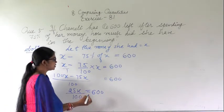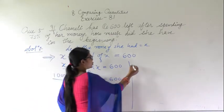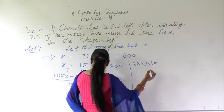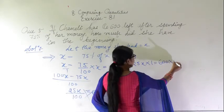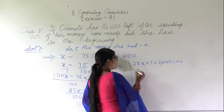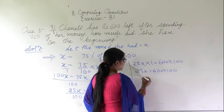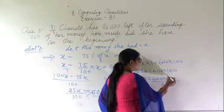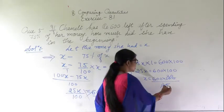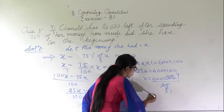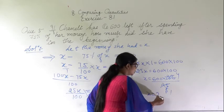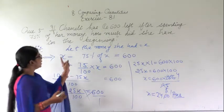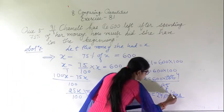On solving by cross multiplication: 25x into 1 equals 600 into 100, so x equals 600 into 100 upon 25. Simplifying, x equals 2400. So she had 2400 rupees in the beginning.